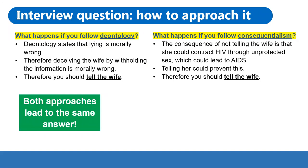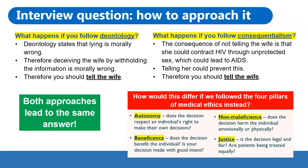Interestingly, both methods lead to the same answer here. However, if we were to follow the four pillars of medical ethics, we'd get a slightly different response, especially when you look at autonomy — you would have to respect the patient's right to make their own decisions. But you could look at non-maleficence and beneficence and argue it would be in the wife's best interests to tell her. And also justice — all patients are entitled to equal and fair treatment, and not telling the wife arguably doesn't follow justice.